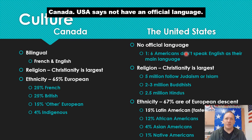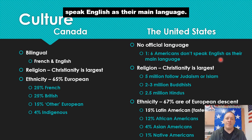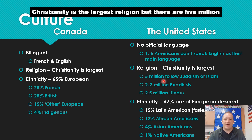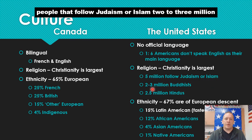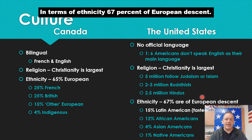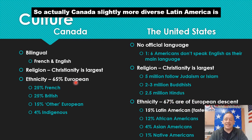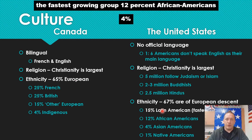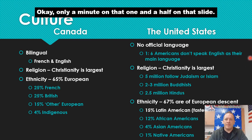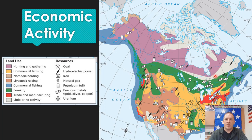The United States does not have an official language. Most people speak English, but one out of six Americans don't speak English as their main language. Christianity is the largest religion, but there are 5 million people who follow Judaism or Islam, 2 to 3 million Buddhists, and 2.5 million Hindus. In terms of ethnicity, 67% are of European descent — so actually Canada is slightly more diverse. Latin Americans are the fastest growing group, 12% are African American, 4% Asian, and 1% Native.